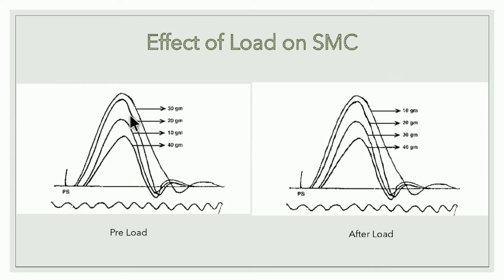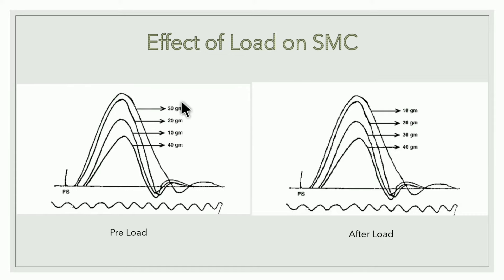In the preload graph, from 10g the height of contraction gradually increases up to 30g, then at 40g the height decreases. This is explained by Frank Starling's law: the force of contraction is directly proportional to the initial length of the muscle fiber within the physiological limit. The initial length increases with load, increasing force up to 30g (the physiological limit). Beyond that, force does not increase.